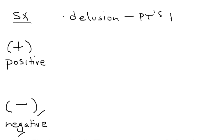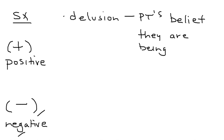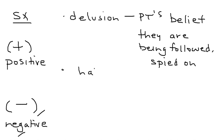For positive symptoms, the first one is a delusion. A delusion is basically a patient's belief of something very troublesome — for example, they believe that they are being followed or they believe that they are being spied upon, which can cause tremendous distress in their life.